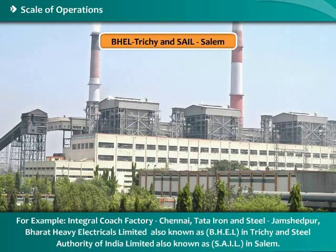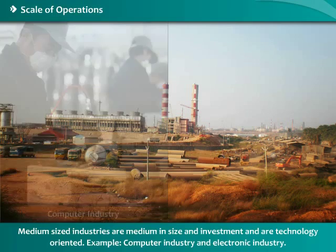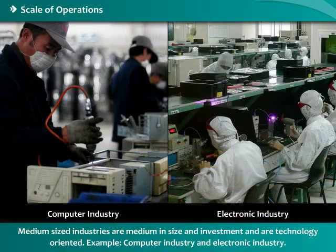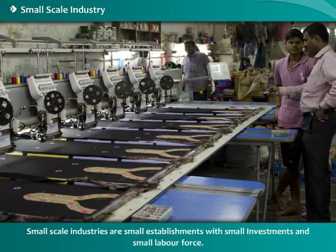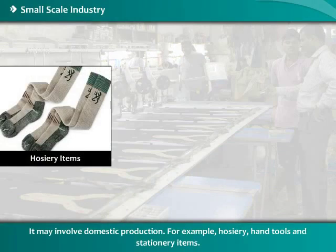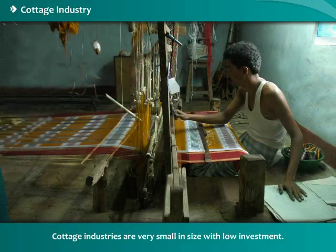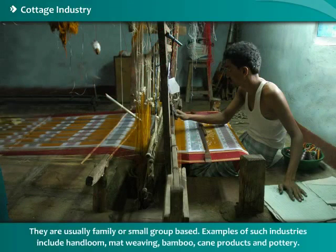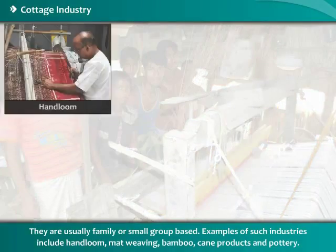Steel Authority of India Limited (SAIL) in Salem is another large-scale example. Medium-sized industries are medium in size and investment, and are technology-oriented; examples include the computer industry and electronic industry. Small-scale industries are small establishments with small investments and small labor force; they may involve domestic production, for example hosiery, tools, and stationery items.